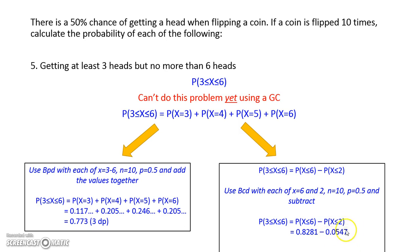Subtracting these gives 0.773 to 3 decimal places. As you can see, both approaches give you the same answer. Thank you.